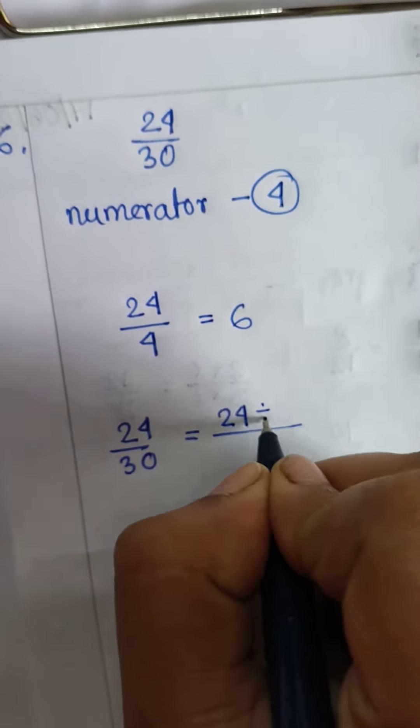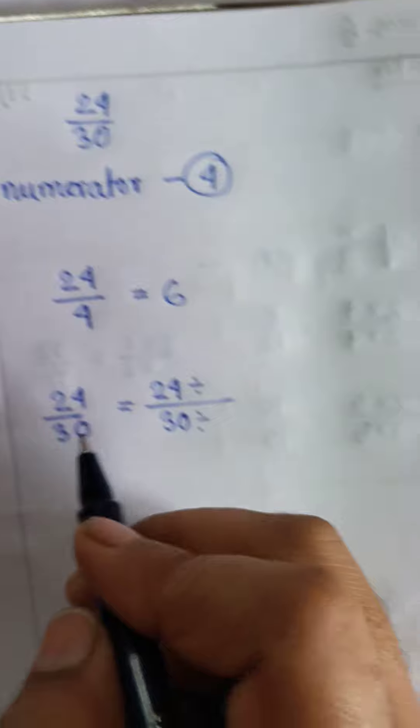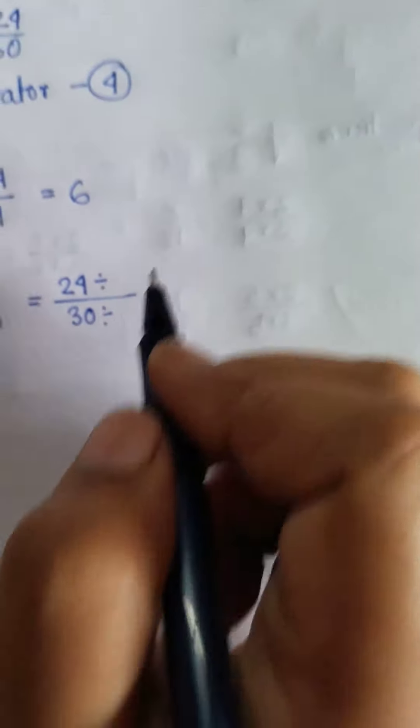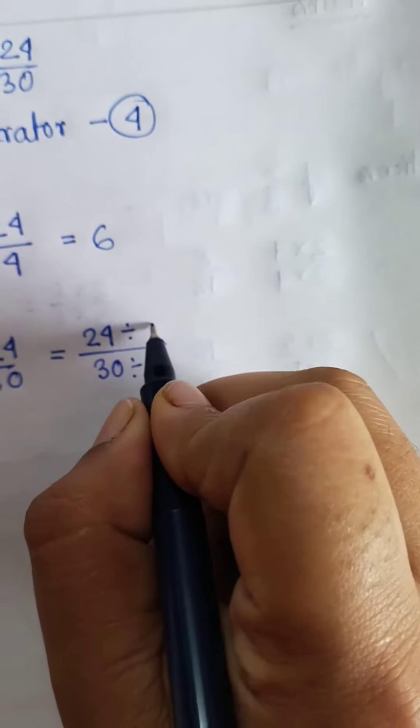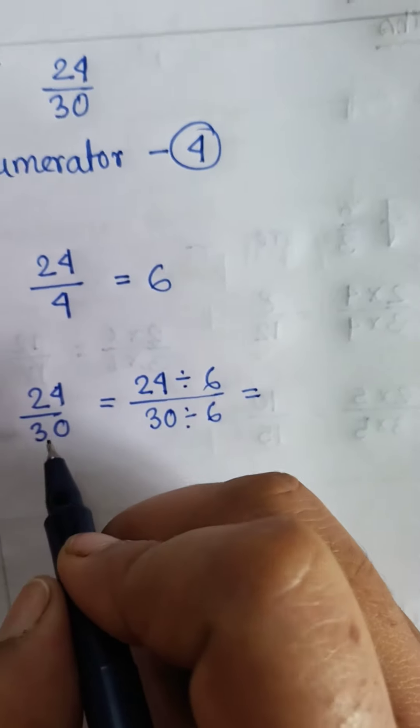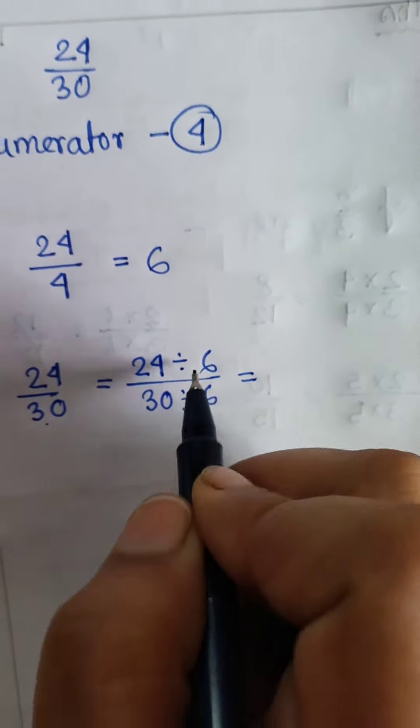The equivalent fraction of 24 by 30 having numerator 4 will be - we have to just divide the numerator and denominator of this fraction with 6.